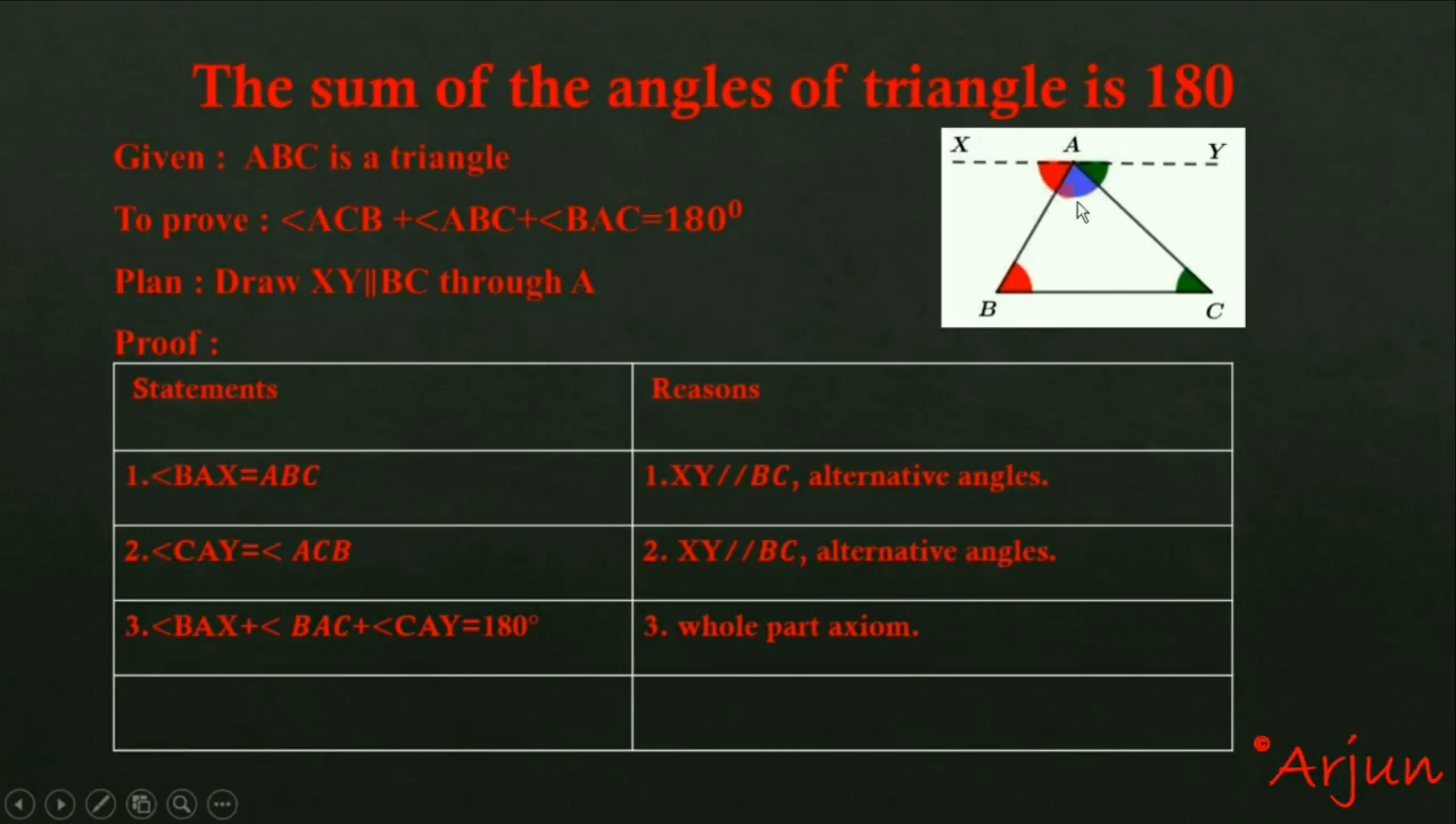All angles on a straight line sum to 180 degrees. So angle BAX plus angle BAC plus angle CAY equals 180 degrees.